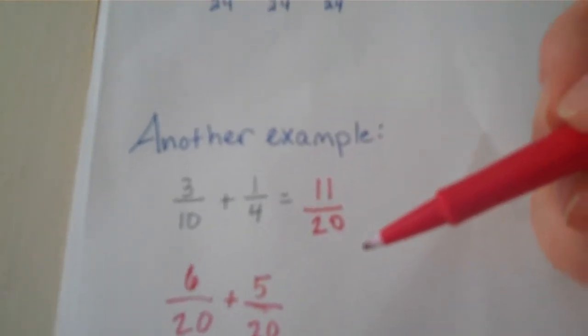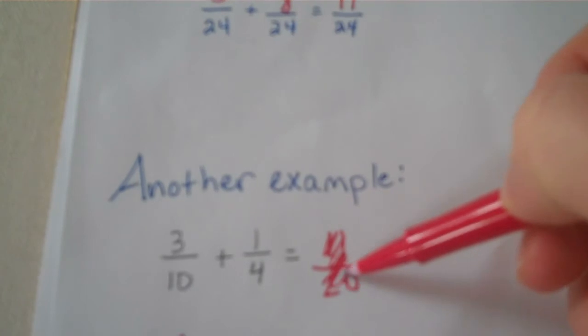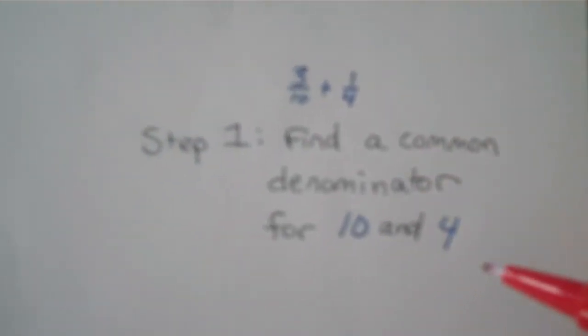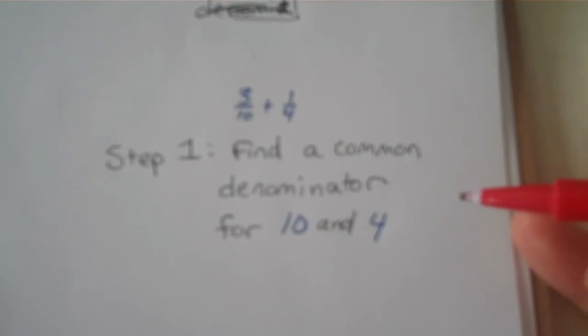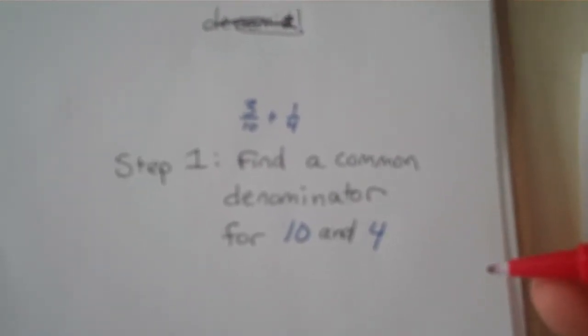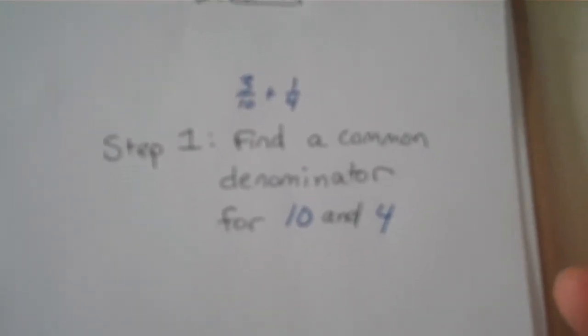Here's another example. Three tenths plus one fourth. Well, for step one, I need to find a common denominator for ten and four. There's lots of possibilities. I could use twenty, or forty, or sixty, or eighty, or a hundred. I'm gonna pick a hundred so we can use money.